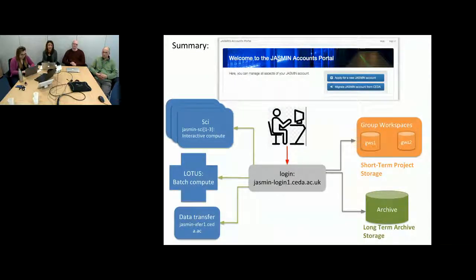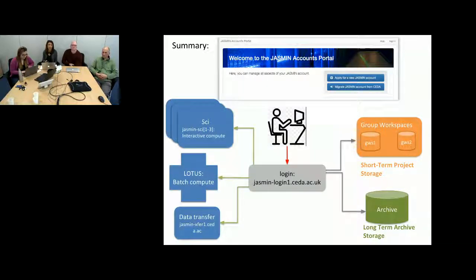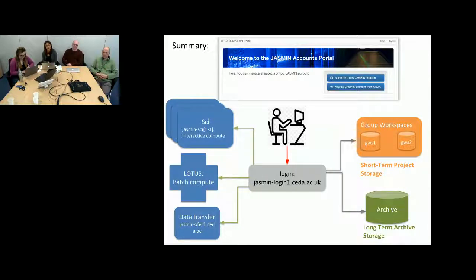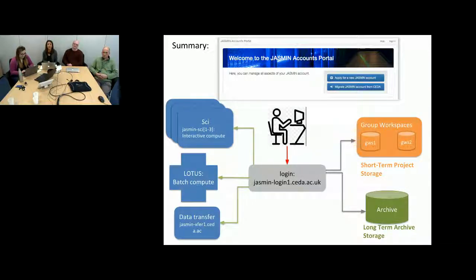Next is a summary flowchart starting from having a Jasmine account portal, which gives you access to the login role. That login role controls access to the different services on the left side — the LOTUS and data transfer servers — and other services on the right, like the group workspace and data services that need to be applied for separately.